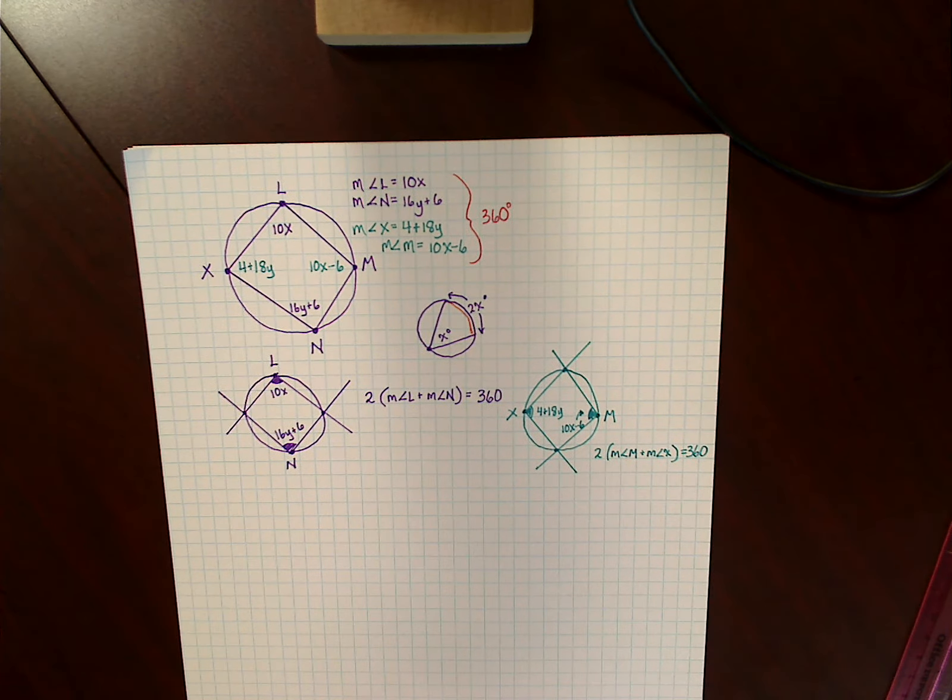So there's the intercepted arc. Let's say that intercepted arc is 100. Then this inscribed angle would be 50.